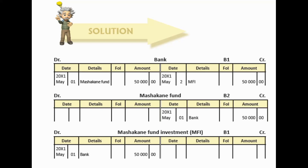The fund forms part of the members' equity. So we are going to credit the fund because it falls under members' equity. Looking at the effect on the accounting equation: assets increase with $50,000 and members' equity increases with $50,000.